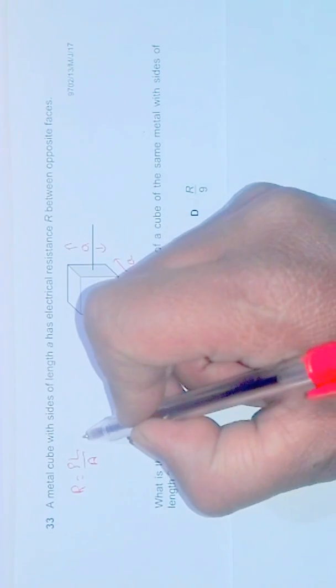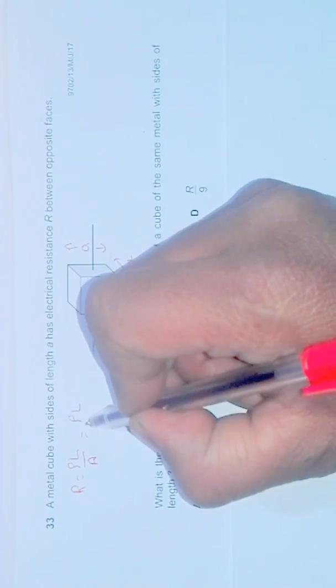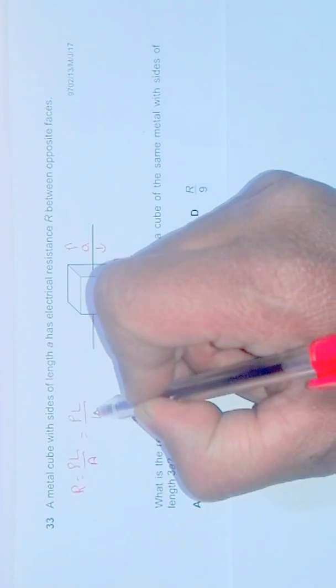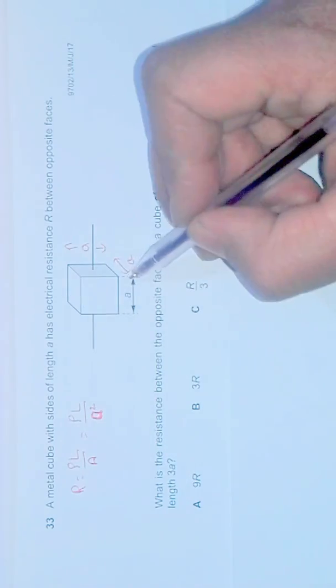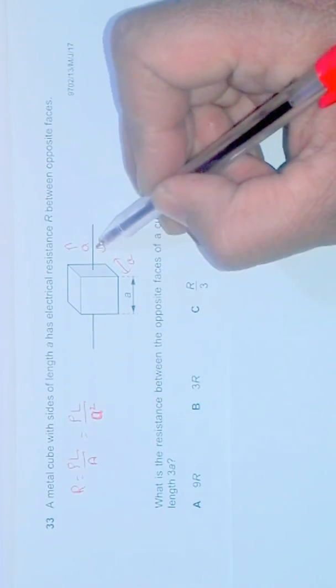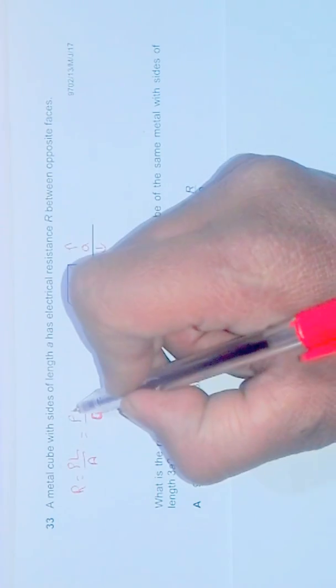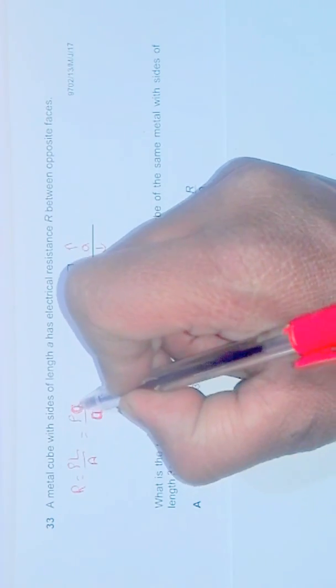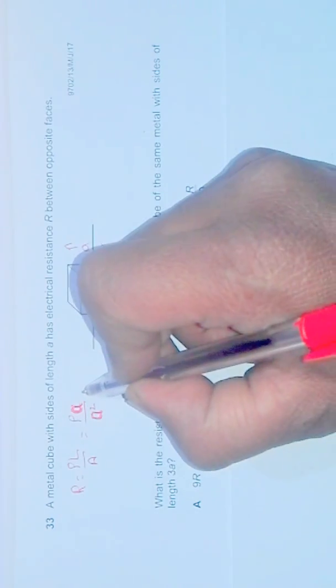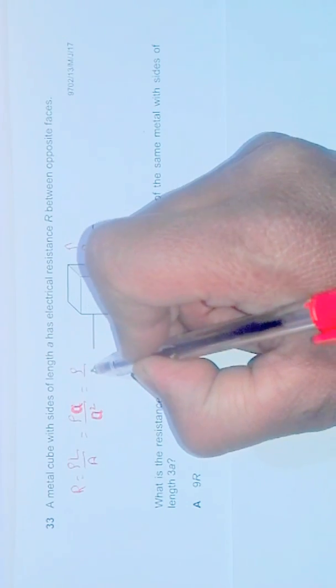For this cube, it will be rho L by A square. Because the length is A and the height is A, so it should be A squared and this should be A. So it will ultimately give me rho by A.